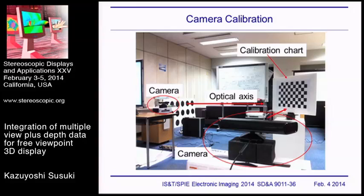We performed camera calibration using a chessboard pattern. This is a picture of our experimental environment, showing two cameras, one PC, and one calibration chart. The other two cameras are on the other side of the calibration chart.